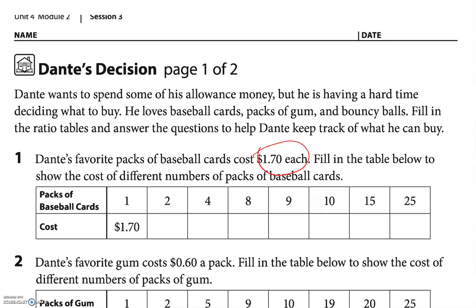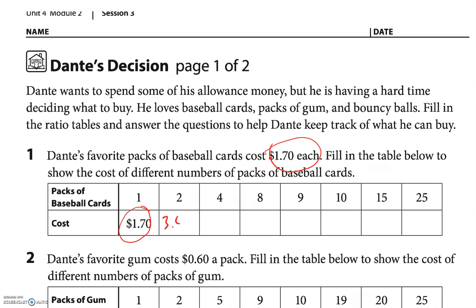Baseball cards are $1.70 each. I can double that — two cards is $1 plus $1 is $2, and 70 plus 70 is $1.40, so $3.40. I double it again to get $6.80. Double the 80 cents again — 80 cents plus 80 cents pushes over a dollar, so that's $1.60, and 6 plus 6 is 12, making it $13.60. I'm going to skip nine and go to 10.